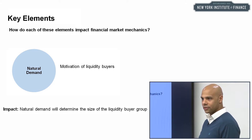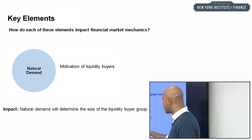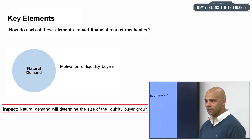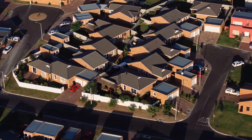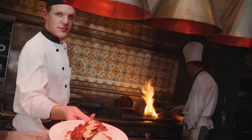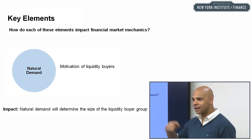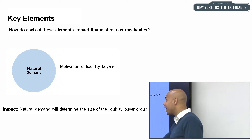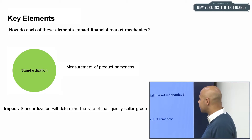The next element is natural demand, and not a lot of people talk about this. Natural demand is the motivation of liquidity buyers — do I need to buy or sell this thing, or is it just an option for me? Going back to examples with real estate, travel, and food — which has the highest natural demand? Food. If you don't buy that apartment or take that taxi, that's fine. But if you don't eat, you die. It's recurring demand — like a funeral parlor, which never goes out of business.